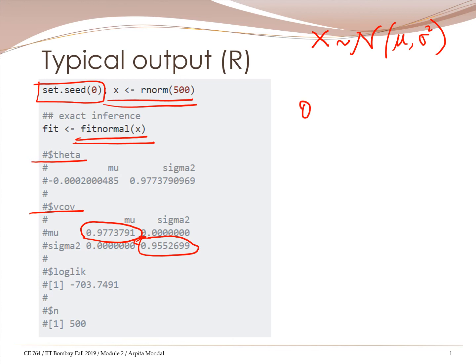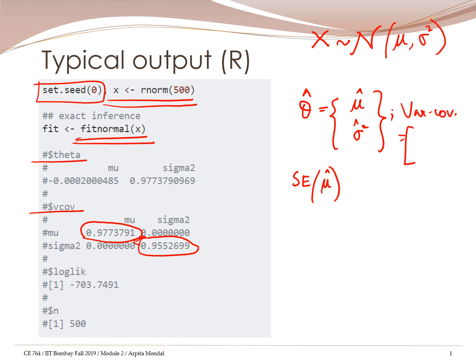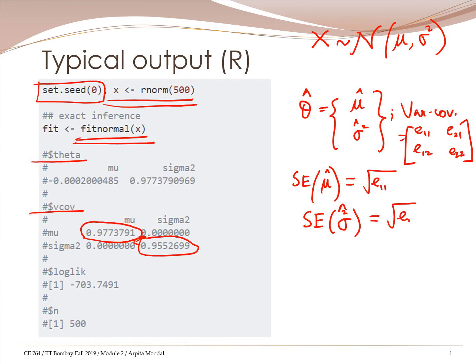Now we have got theta hat, which is nothing but mu hat and sigma square hat. We can get the standard error of mu hat. We have also got the variance-covariance matrix, with elements E11, E12, E21, E22. The diagonal elements give the squares of the standard errors of mu hat and sigma square hat, and the off-diagonal elements are 0. So the standard error of mu hat is given by the square root of E11, and the standard error of sigma square hat is the square root of E22.